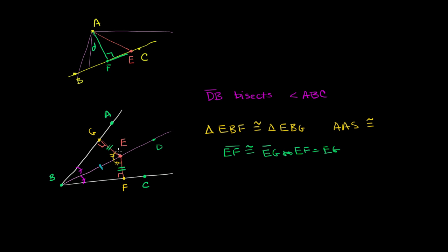The lengths of those two segments are the distances between the point and those two respective sides. So we've just proven the first case: if a point lies on an angle bisector, it is equidistant from the two sides of the angle.